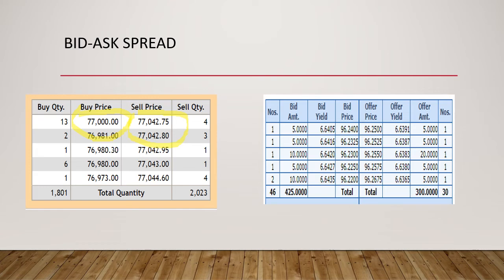When I come to the next example, it is an example of a government security. You can see there is a bid price and there is an ask price. If you see the difference between the ask price and the bid price, it is not much — there is hardly any difference. This indicates the concept of liquidity risk: when the bid-ask spread is higher, the liquidity risk is high. In the first case, circled in yellow, is the example of higher liquidity risk.